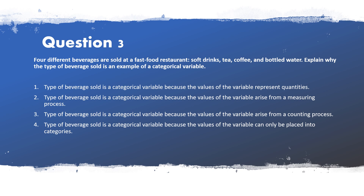Question three: 'Four different beverages are sold at a fast food restaurant — soft drink, tea, coffee, and bottled water. Explain why the type of beverage sold is an example of a categorical variable.' It is a categorical variable because the values of the variable cannot be measured and do not represent quantities. Although you could count four different types, the key reason is that the values of the variable can only be placed into categories — so option three (arises from the counting process / values placed into categories) is correct.